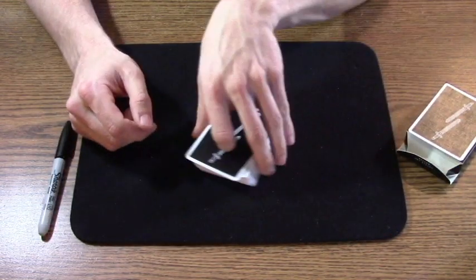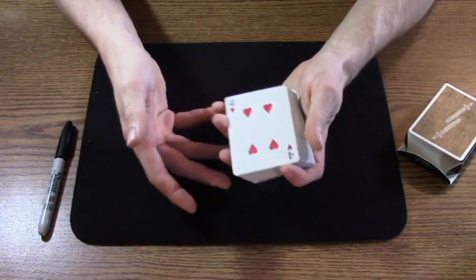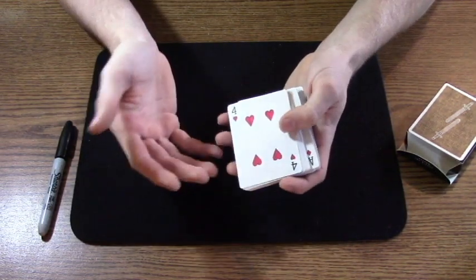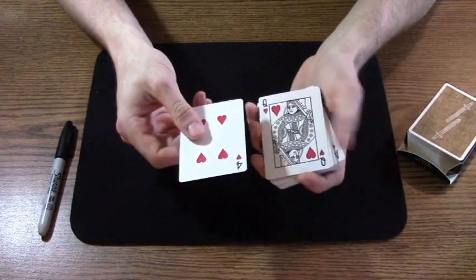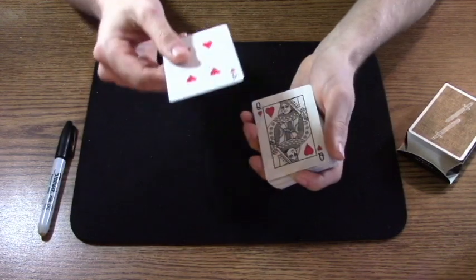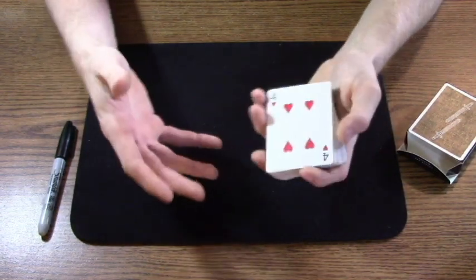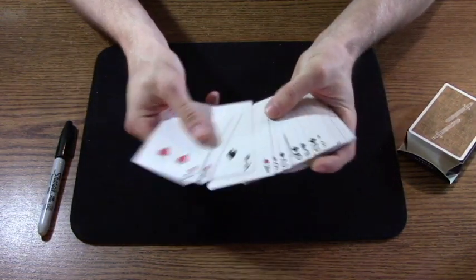Now I begin, I just say I'm gonna remove the two jokers from the deck, they're gonna help us in a moment. As I spread through to find the two jokers, me personally I don't flash the card I'm about to force, because I don't want them to see it and then pick it a few seconds later, so just my personal preference is I spread over the Queen of Hearts that is second from bottom.